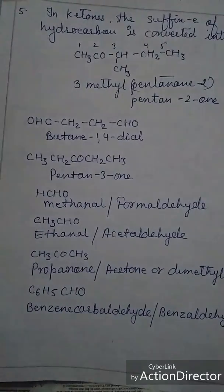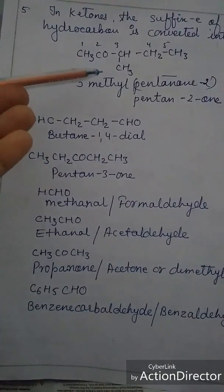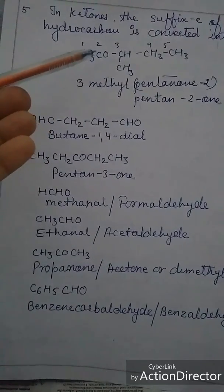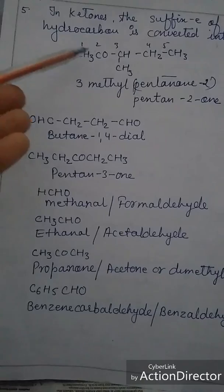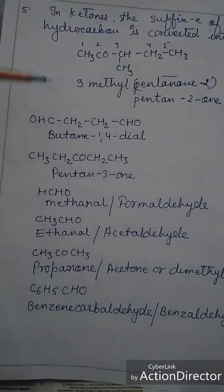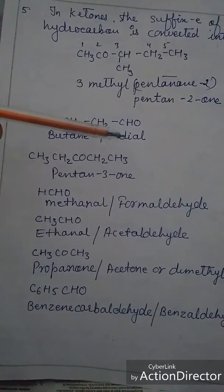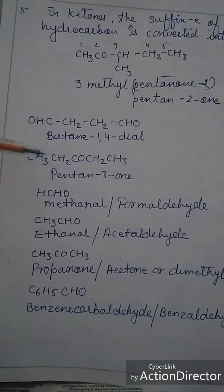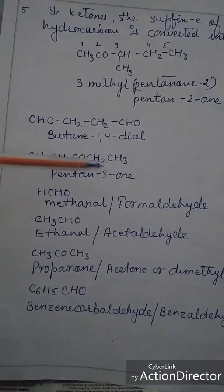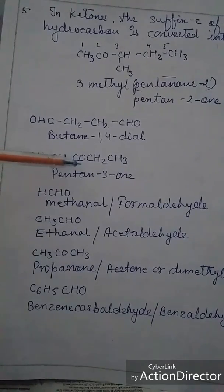In ketones, the suffix 'e' of the hydrocarbon is converted to 'one'. Numbering will start from the end that gives the functional group the lowest number. For example, this will be 3-methylpentan-2-one. This one is butane-1,4-dial since two aldehyde groups are there, so it will be dial. This one is a ketonic group with five carbons, so it will be pentan-3-one.